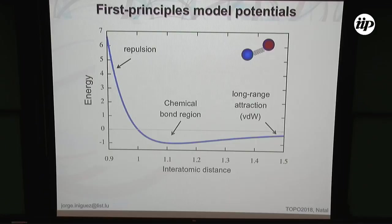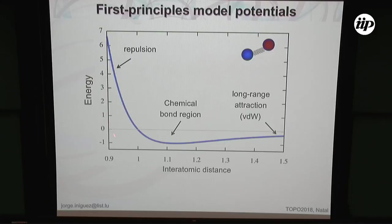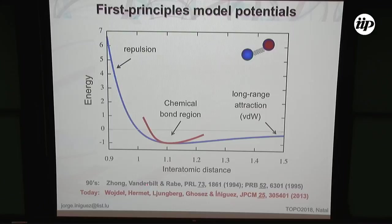DFT is simply too heavy computationally. So many people introduce some kind of atomistic potential — here I plot the interaction between two atoms where you have a repulsion region when they are too close, a region where only Van der Waals forces act when they are very far away, and a minimum of energy that defines the chemical bond distance. In many models, people describe the whole interaction range, which is useful for chemistry. In our case, we use models that concentrate in the chemical bond region.